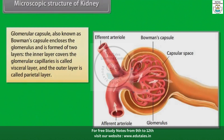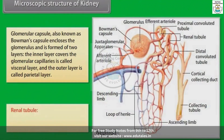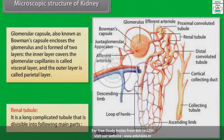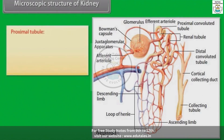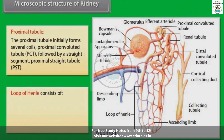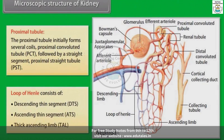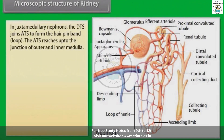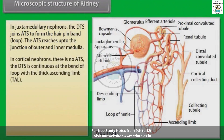The glomerular capsule, also known as Bowman's capsule, encloses the glomerulus and is formed of two layers. The inner layer, which covers the glomerular capillaries, is called the visceral layer, and the outer layer is called the parietal layer. The renal tubule is a long, complicated tubule divisible into the following main parts: the proximal tubule, which initially forms several coils — the proximal convoluted tubule (PCT) — followed by a straight segment, the proximal straight tubule (PST). The loop of Henle consists of a descending thin segment, an ascending thin segment, and a thick ascending limb. In juxtamedullary nephrons, the descending thin segment (DTS) joins the ascending thin segment (ATS) to form the hairpin bend. The ATS reaches up to the junction of the outer and inner medulla. In cortical nephrons, there is no ATS.